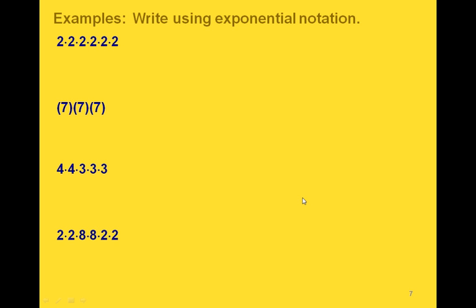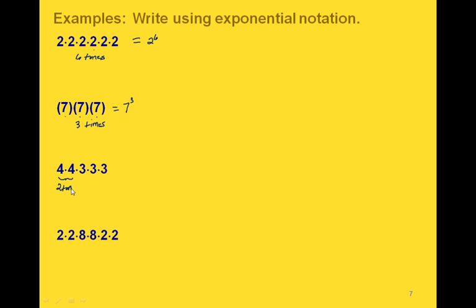Here are some examples of writing expressions using exponential notation. In the first one, we have six factors of two, so we write it as two to the sixth. In the next one, we have three factors of seven, so we write it as seven to the third power, or seven cubed. In the third one, we have two different numbers: two factors of four and three factors of three, so we write it as four squared times three cubed.